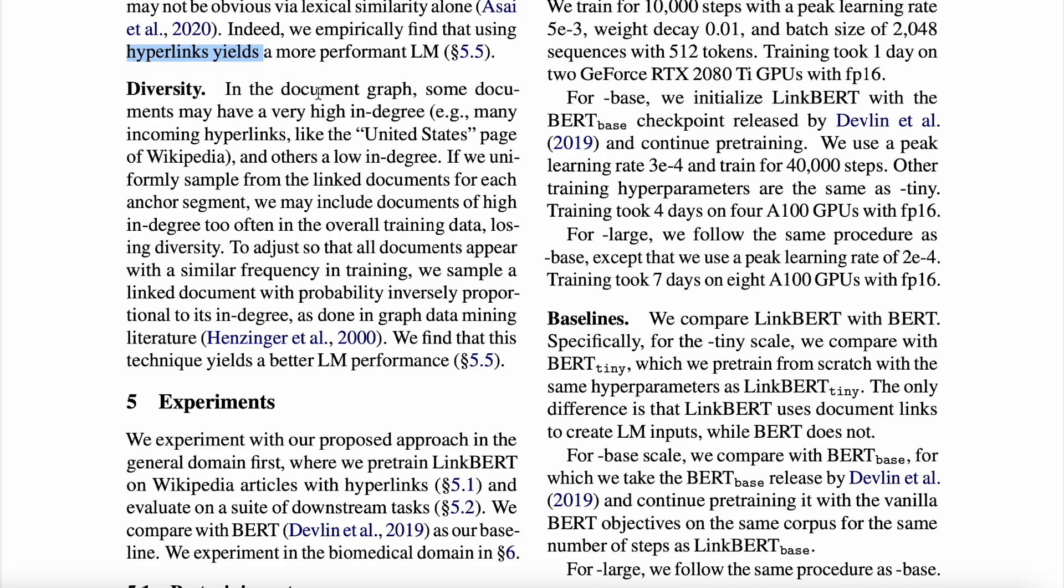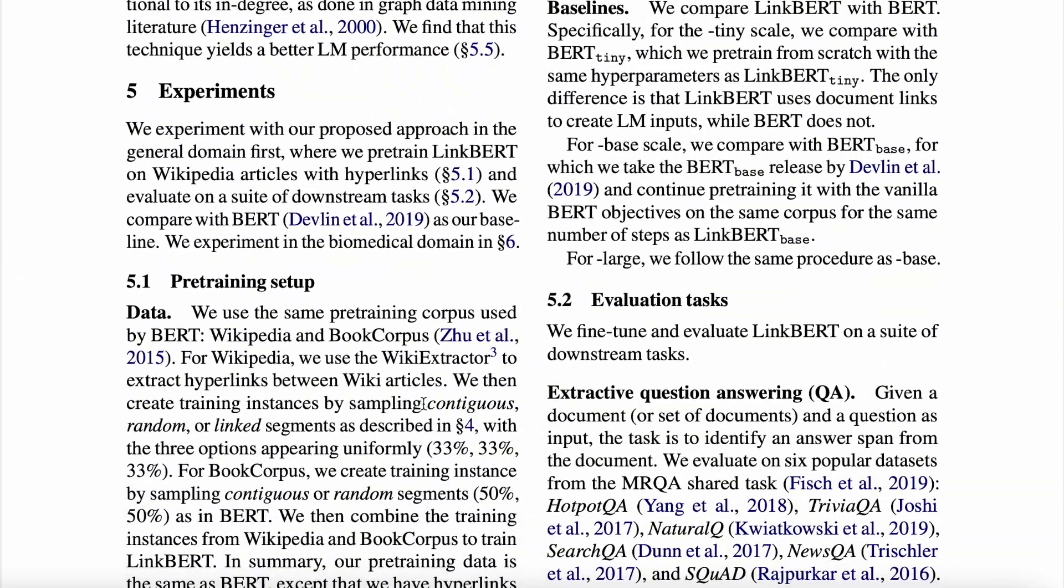The third one is diversity. So in the web you will often find some master nodes, right? If you talk about, let's say, a page about the United States, then you'll have many pages that link to this master page, which means this could be the supporting document for many anchor segments or anchor documents that you have. But this is not what you want, right? So they sample the linked document based on how much in-degree the supporting document has. So if it has less number of in-degree, the probability of choosing it becomes higher for getting it linked to the anchor document. So this is the logic that they use to add diversity rather than adding the same documents again and again as a supporting document.